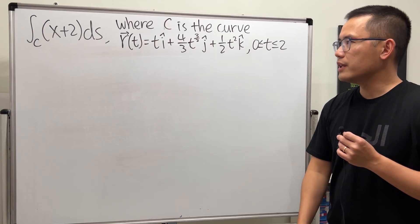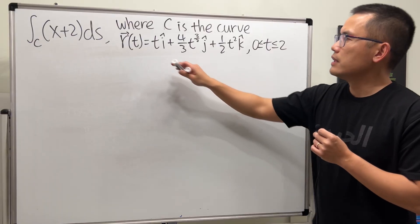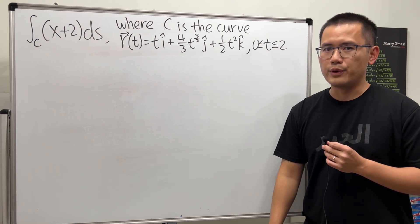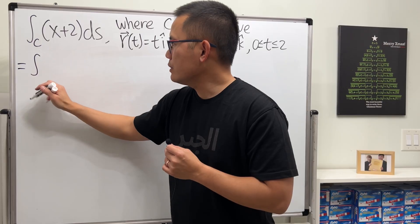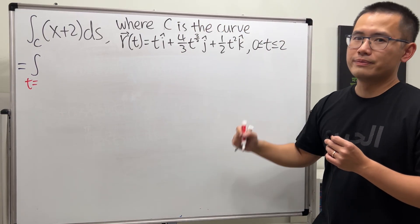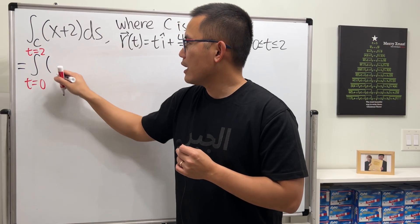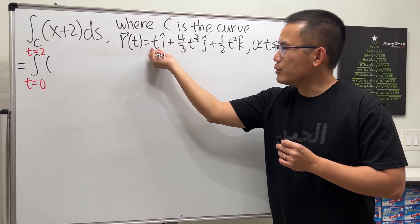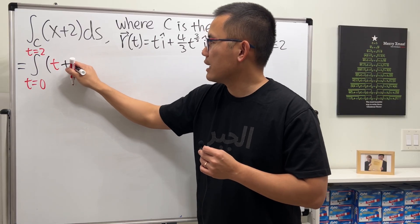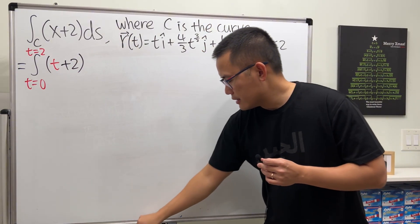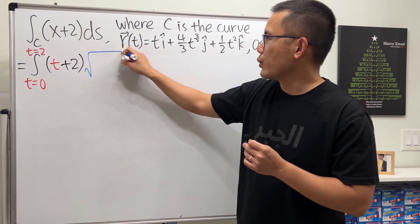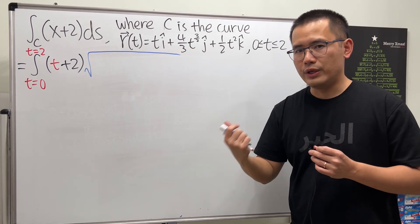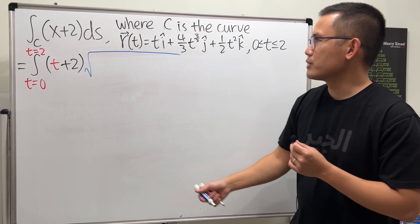For the next problem, we have a 3D version. We know C is the curve given by a vector function over a time interval, so we already have the parametrization. We take the integral to the t world with t going from 0 to 2. x is just T, so we put T plus 2. For the ds, we open the square root and differentiate each component, square each derivative, and add them up inside.